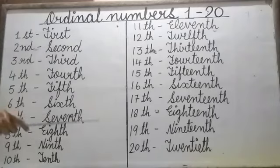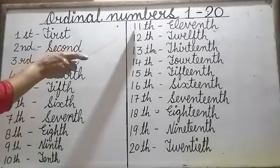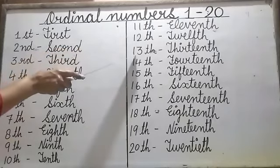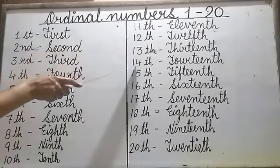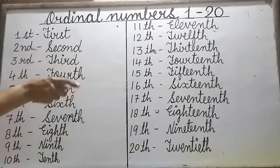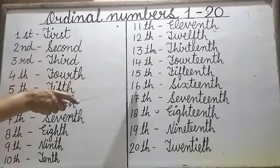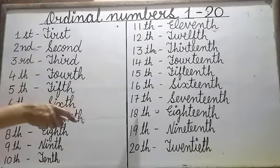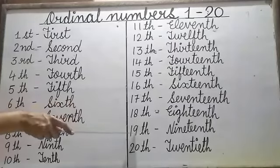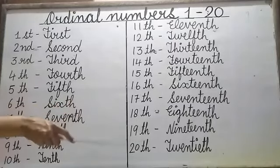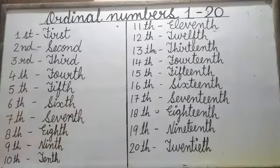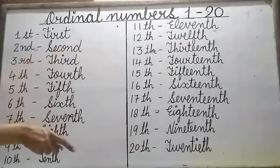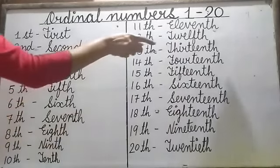Now, 11th, Twelfth, Thirteenth, Fourteenth, Fifteenth, Sixteenth, Seventeenth, Eighteenth, Nineteenth, Twentieth. As you see, from 11th to 20th, we will add TH.